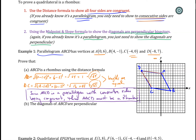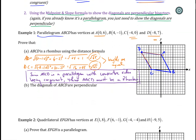An alternative way for part B would be using the diagonals. The other version would be to use the midpoint and slope formula to show that you have a perpendicular bisector. But since we already have a parallelogram, we just have to show that the diagonals are perpendicular to each other. You can draw the diagonals in so you have a general sense of what we're looking for.